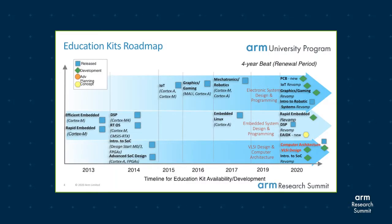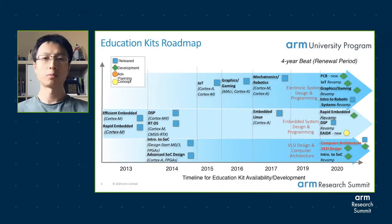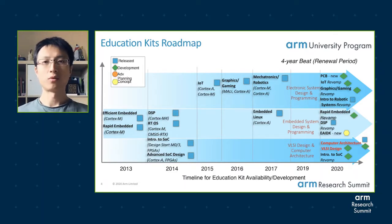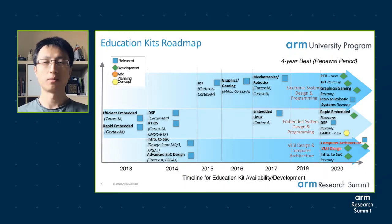As you can see, we have a pretty busy roadmap and things keep changing. We aim to revamp these education kits every four years, but in reality it's usually more frequent than that. In 2020 we launched several new education kits along with some revamps. Today I would like to highlight three of them: the computer architecture, VLSI design, and the Internet of Things.